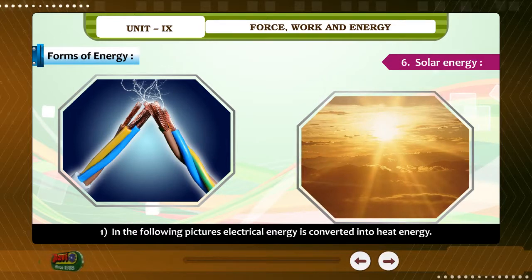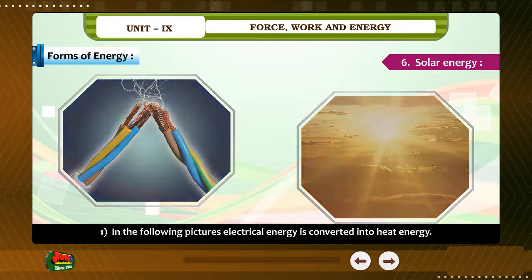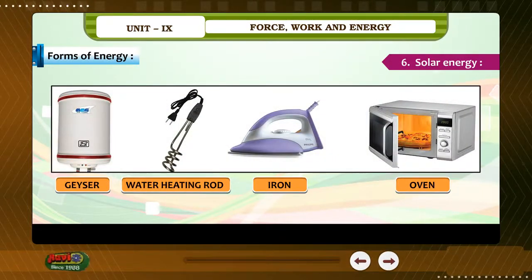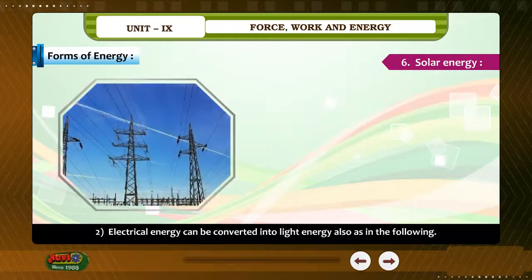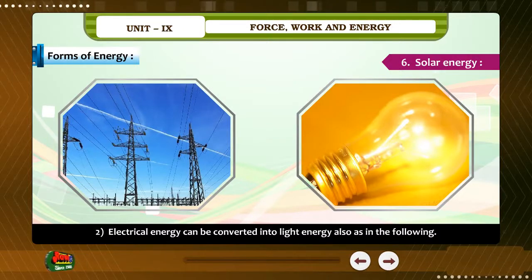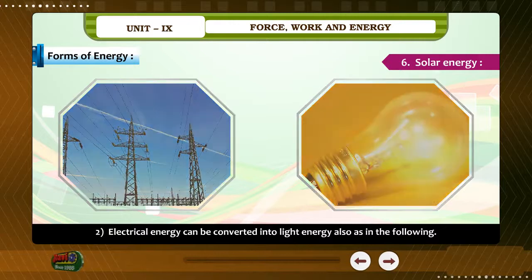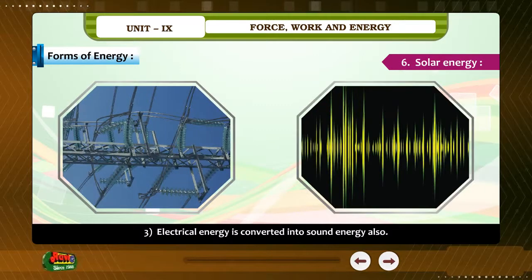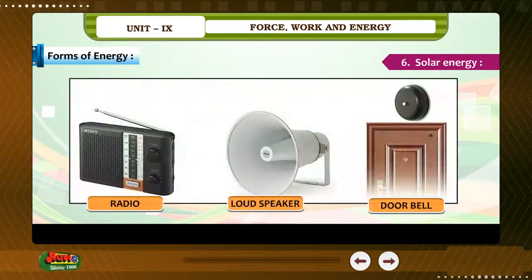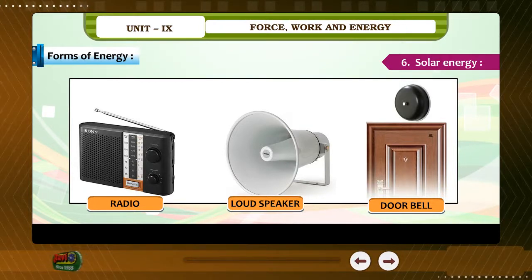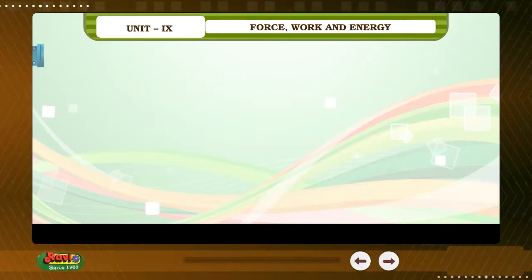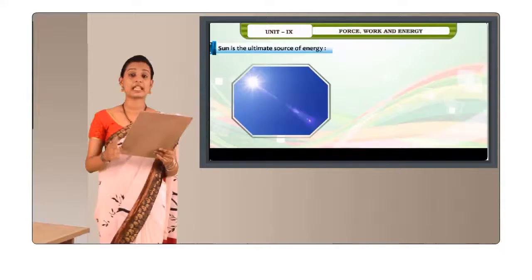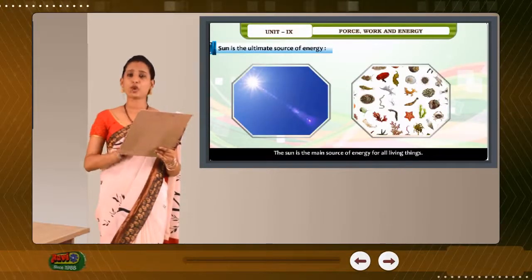In the following pictures, electrical energy is converted into heat energy. Electrical energy can also be converted into light energy, as in an electric bulb, television, and lighthouse. Electrical energy is converted into sound energy also, as in a radio, loudspeaker, and doorbell. The sun is the ultimate source of energy — it is the main source of energy for all living things. Green plants use the energy from the sun to make food.